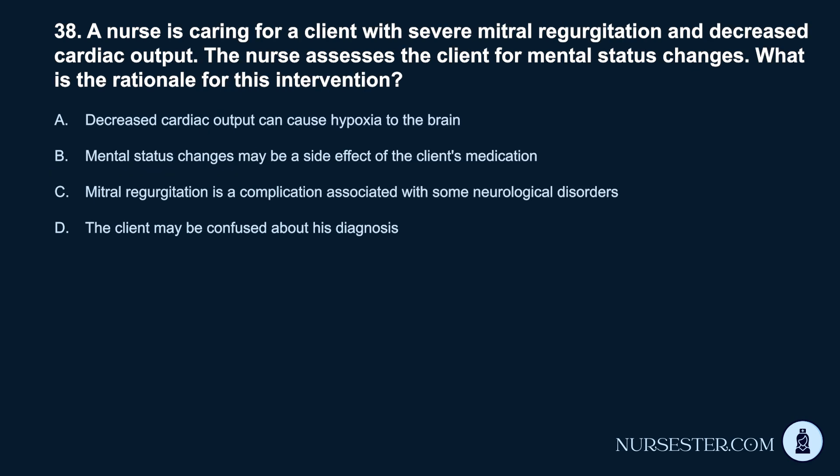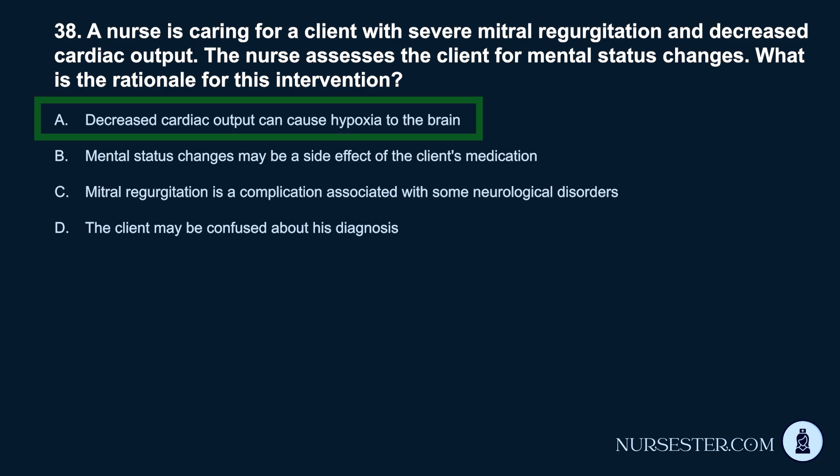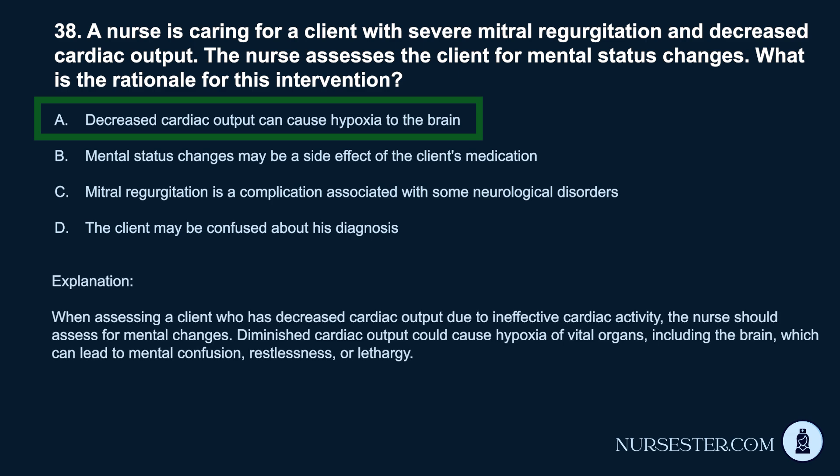Question 38. A nurse is caring for a client with severe mitral regurgitation and decreased cardiac output. The nurse assesses the client for mental status changes. What is the rationale for this intervention? a. Decreased cardiac output can cause hypoxia to the brain. b. Mental status changes may be a side effect of the client's medication. c. Mitral regurgitation is a complication associated with some neurological disorders. d. The client may be confused about his diagnosis. Correct answer: a. Decreased cardiac output can cause hypoxia to the brain. Diminished cardiac output could cause hypoxia of vital organs including the brain, which can lead to mental confusion, restlessness, or lethargy.